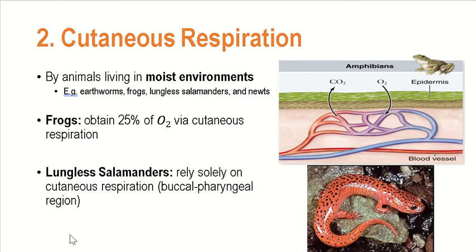For others, the respiratory surface is the skin — the integument. For animals living in moist environments such as earthworms, frogs, lungless salamanders, and newts, their respiratory surface is their integument or skin. It is in their skin where cutaneous respiration — also termed integumentary respiration — occurs, referring to the exchange of gases across the integument. This type of respiration is most highly developed among frogs, which obtain 25% of their oxygen via cutaneous respiration, with the remaining 75% coming from their lungs.